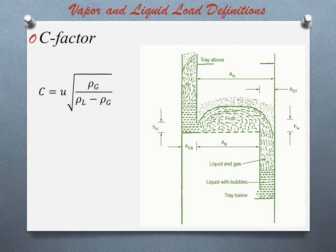Then we come to the C factor. The C factor is defined as: C equals U multiplied by the square root of rho-G divided by (rho-L minus rho-G), where U is the velocity, rho-G is the gas density, and rho-L is the liquid density. This is the best gas loading term for comparing capacities of systems with different physical properties. It has the same units as velocity and is directly related to droplet entrainment. As with the F factor, the user should beware of any data for which the area basis is not clearly specified.